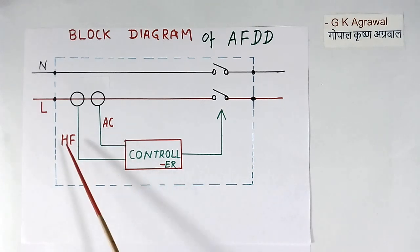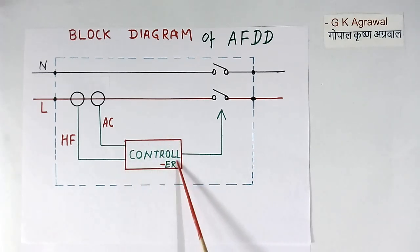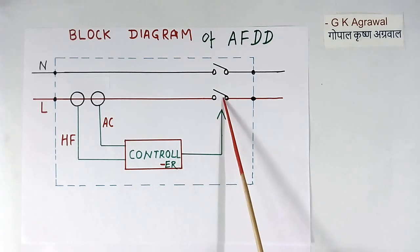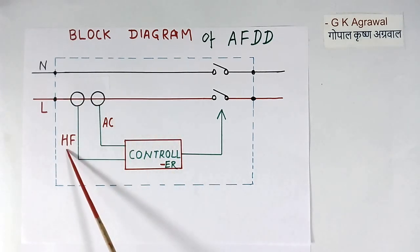This arc produces high frequency current in the wire. These two currents, high frequency and normal AC current, go to controller. Controller will process it, and if required, it will trip using an MCB. There will be MCB inside also. So this way it senses the arc by sensing high frequency current, and trips the system as per requirement.